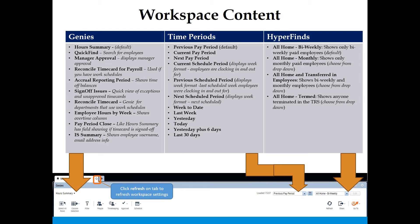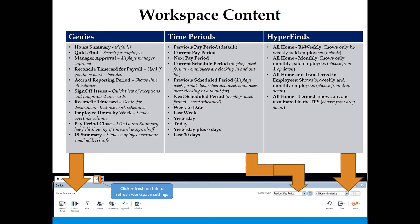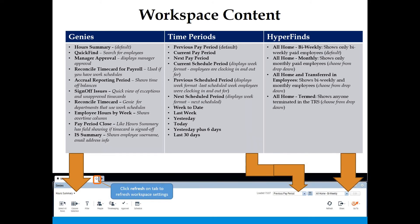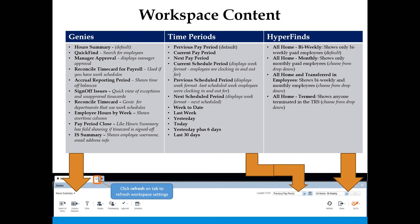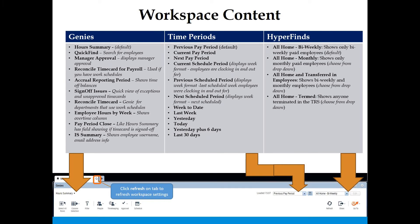Other pre-scheduled date options in Kronos include: week to date, last week, yesterday, today, yesterday plus six days, and last 30 days. If you don't see a date period you need, you can always select the calendar button and select a custom range of dates.